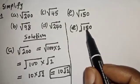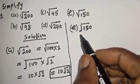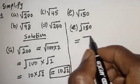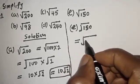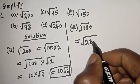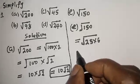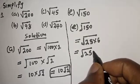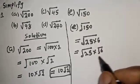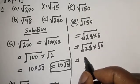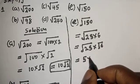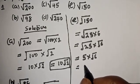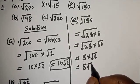Let's consider example (e): square root of 150. This equals square root of 25 multiplied by 6, which equals square root of 25 times square root of 6. Square root of 25 is 5, so this equals 5 root 6. This is the final answer.